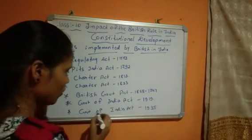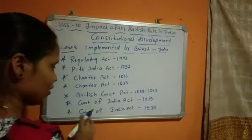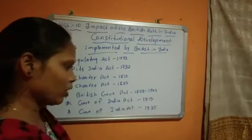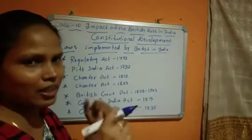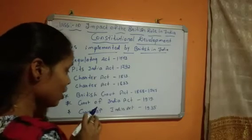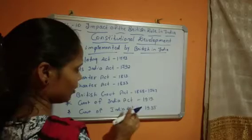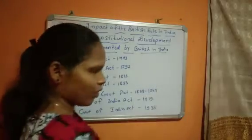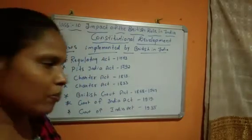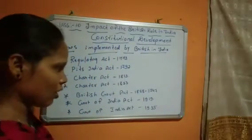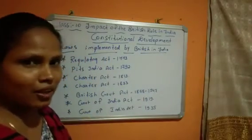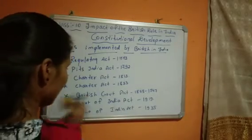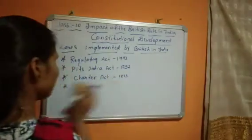These are all the Acts or laws implemented by the British in India. The Government of India Act of 1935 was the last Act implemented by the British. This Act became the foundation of the Indian Constitution. Our constitution was created with the help of this Act. Now we will learn about these Acts one by one.